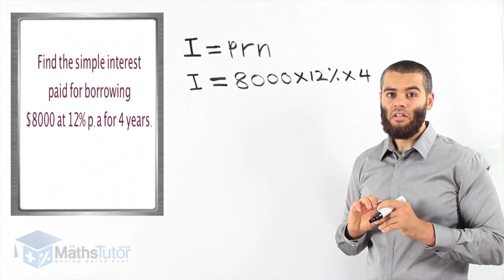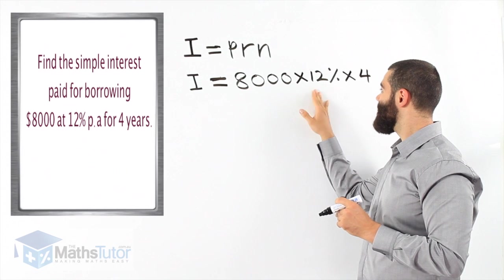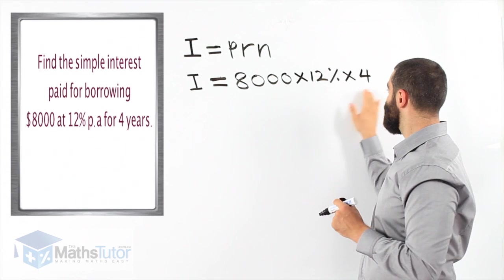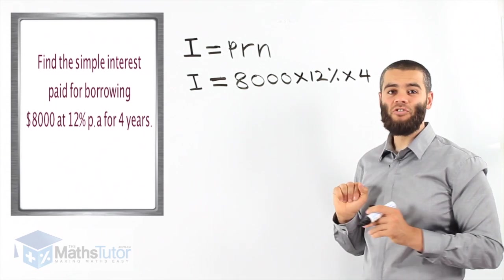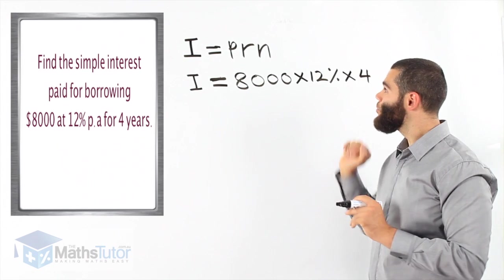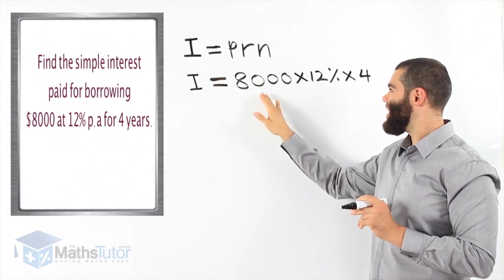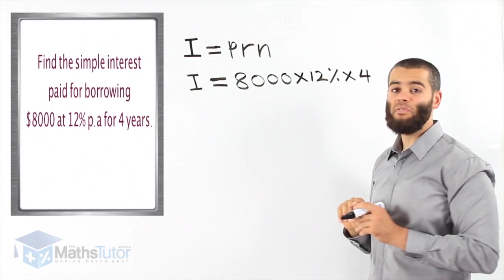At 12% per annum, they're going to get charged interest on top for four years. So, to find the interest, the simple interest, because we use this formula, principal times the rate, times the number of periods. 8,000 times 12% times four. Let's work it out.